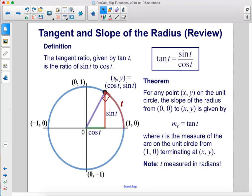The tangent function. The tangent ratio, given by tan t, is the ratio of sine to cosine. Tan t equals sine t over cosine t.